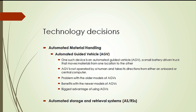AGVs have become more sophisticated over time. Older models followed a cable installed under the floor, while newer models follow optical paths and can go anywhere there is aisle space, even avoiding piles of inventory in their way. One of the biggest advantages of AGVs is that they can go almost anywhere. Another type of automated material handling includes automated storage and retrieval systems, which are basically automated warehouses.